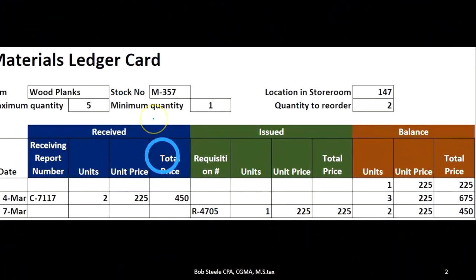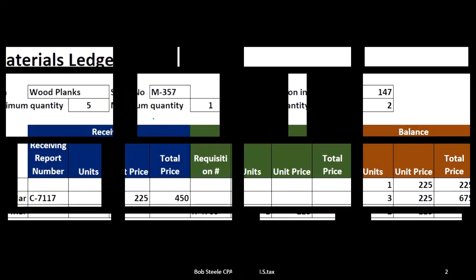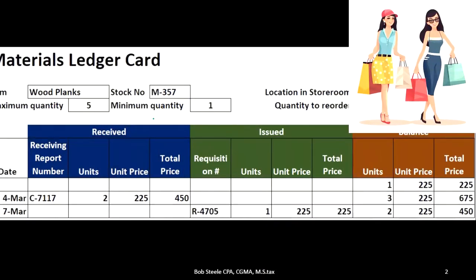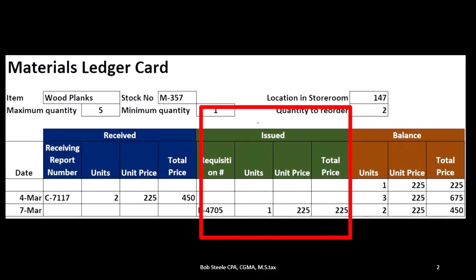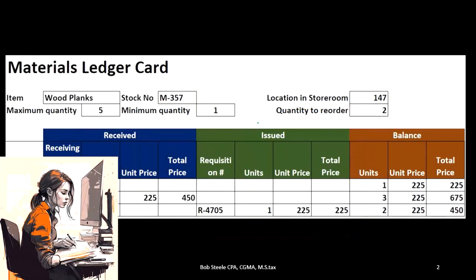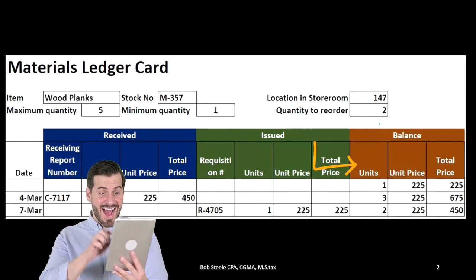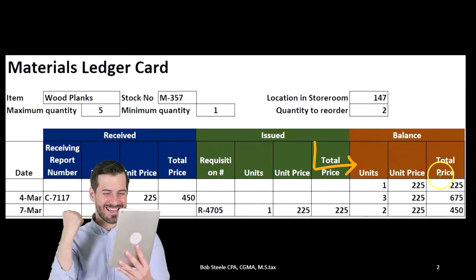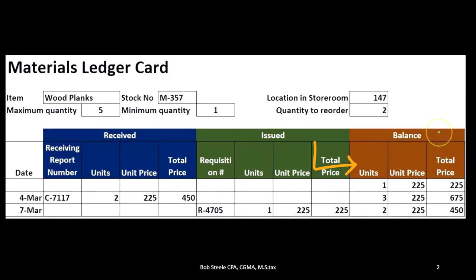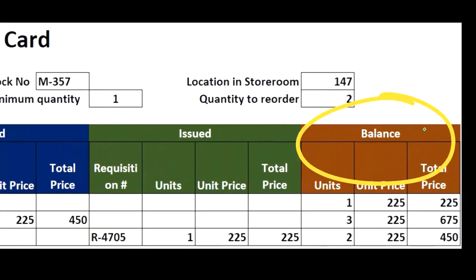Received means we purchased it and have received it — this is when we're getting the inventory. Issued would be similar to our sales item or the cost of goods sold if we were a merchandising company. In this case, we're not selling it — it's not leaving the company. It's going to another department, from our warehouse to the production department, to the factory, to work in process. Then we have the balance, which is what is on the balance sheet as raw material inventory.